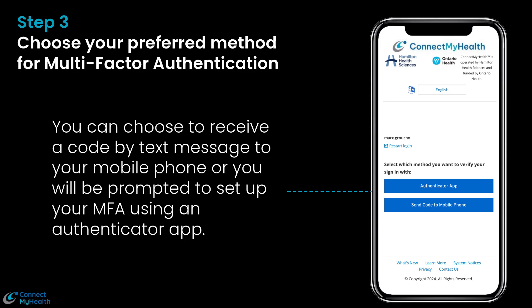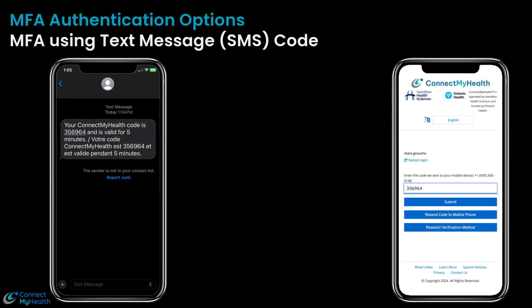Step 3: Choose your preferred method for multi-factor authentication. You can choose to receive a code by text message to your mobile phone, or you will be prompted to set up your MFA using an authenticator app. If you choose to receive a text message with the verification code, here's what you'll need to do next.